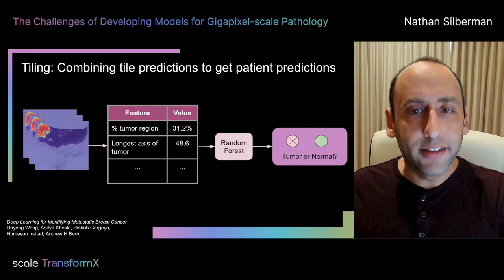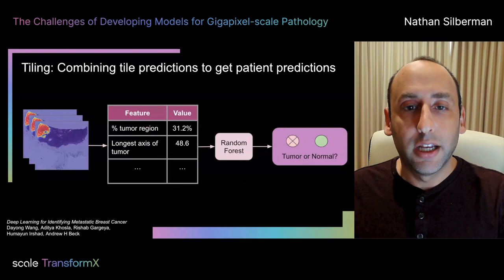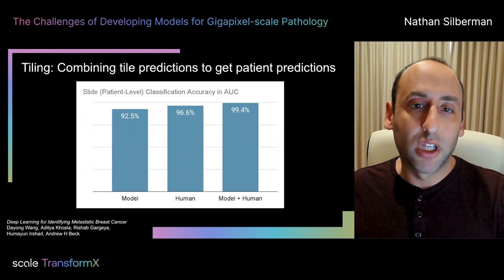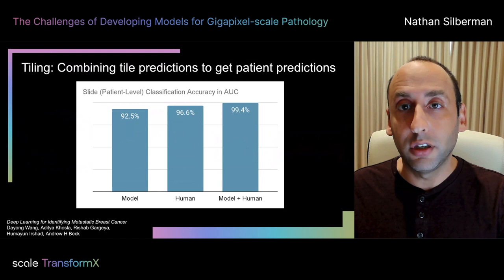Next, given a dataset of probability-of-tumor maps, the team extracted a number of handcrafted features that represent the entire slide. On all of these features from multiple slides, they trained a random forest to perform the final patient-level classification of tumor or not. This approach works very well — still not quite at human-level performance, but the combination of human experts along with model predictions does exceed human experts alone.